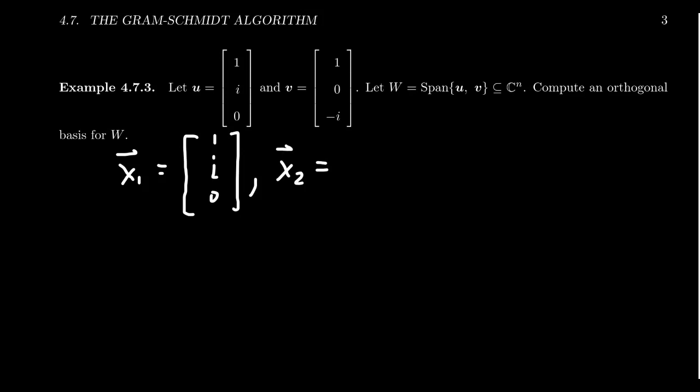And we're going to subtract from it u dot v over u dot u, right here. And remember, as we're taking the Hermitian product, we take the conjugate of the first factor.